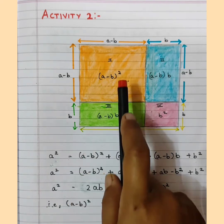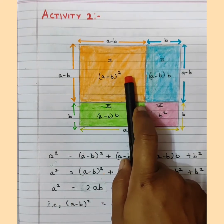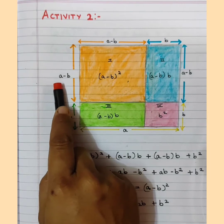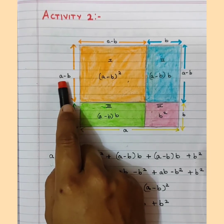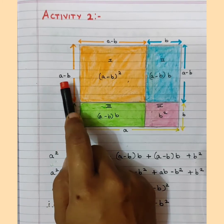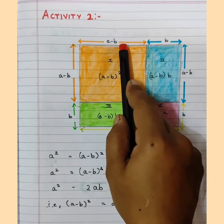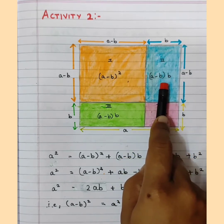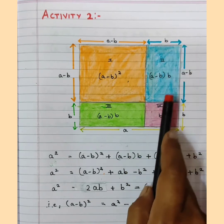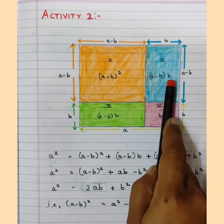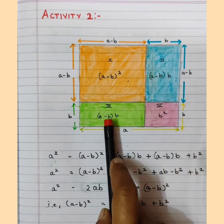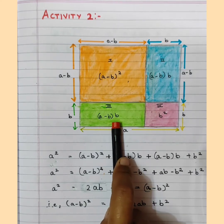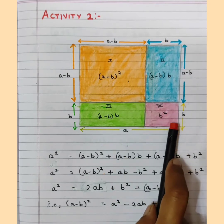For the first rectangle, when you multiply the binomial A minus B by A minus B, you get (A minus B) whole square. When talking about one variable it is a monomial, but two variables make a binomial. The second rectangle is (A minus B) multiplied by B. The third rectangle is also (A minus B) multiplied by B, and the fourth is B square.